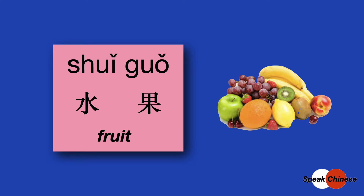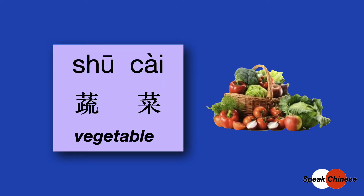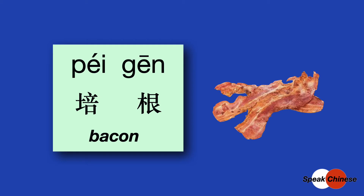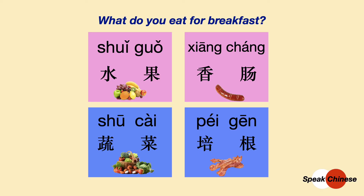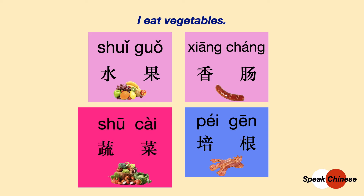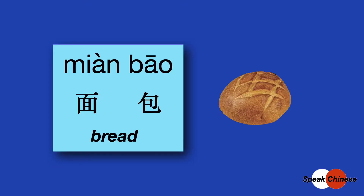水果, fruit. 蔬菜, vegetable. 香肠, sausage. 培根, bacon. What do you eat for breakfast? 你通常早餐吃什么呢? 水果,香肠,还是蔬菜? 培根? 我通常吃蔬菜。 你呢?